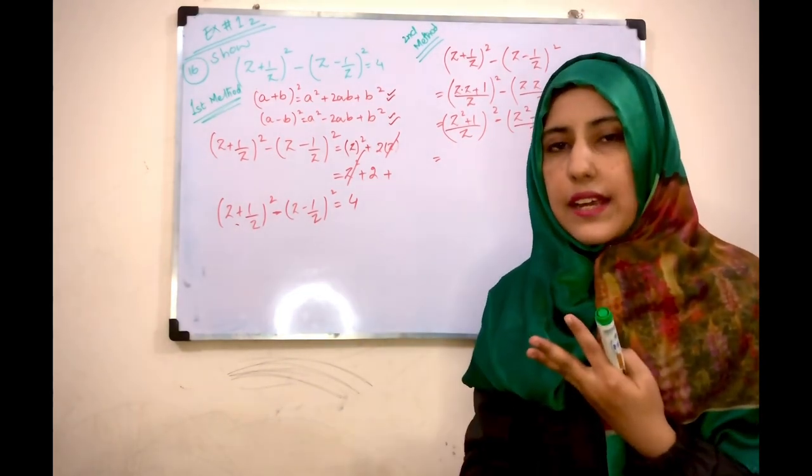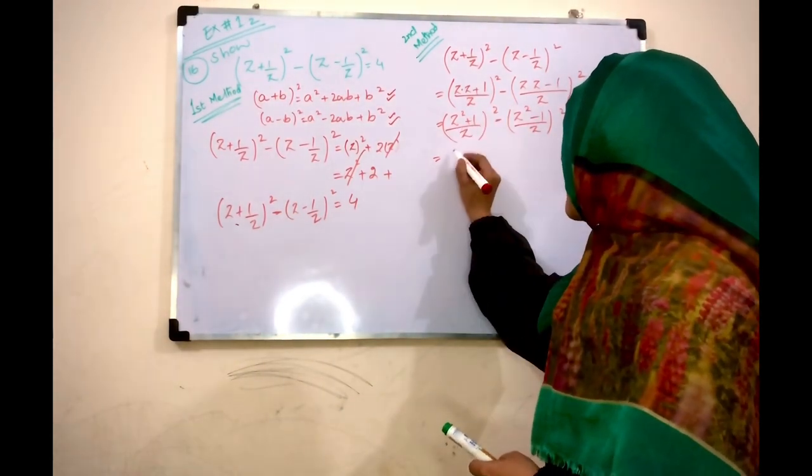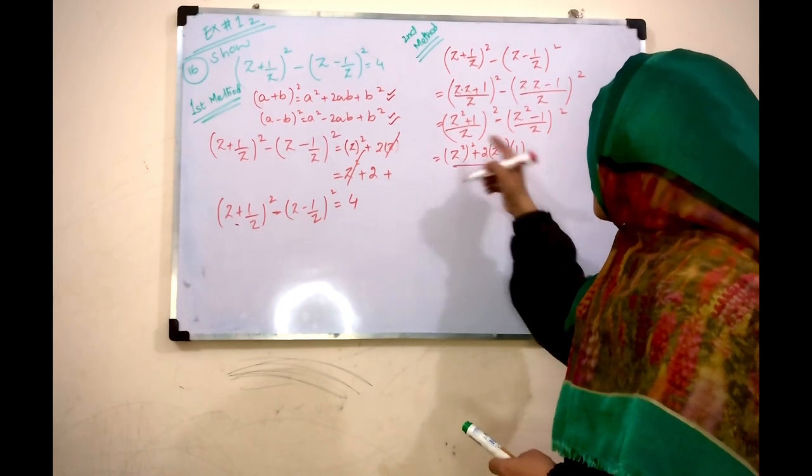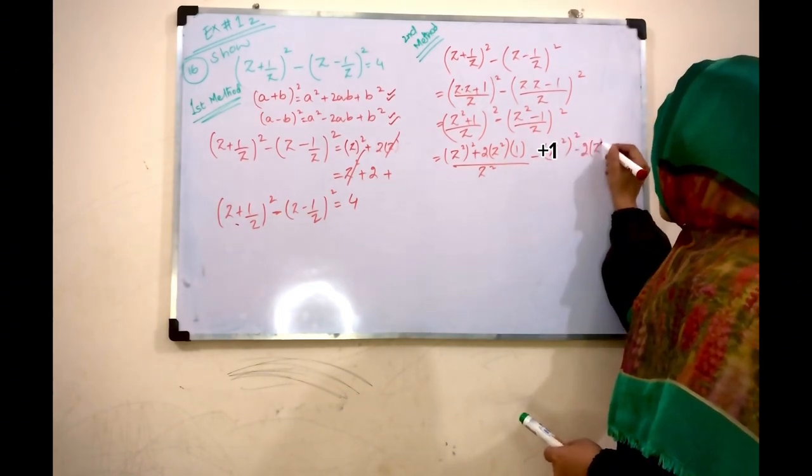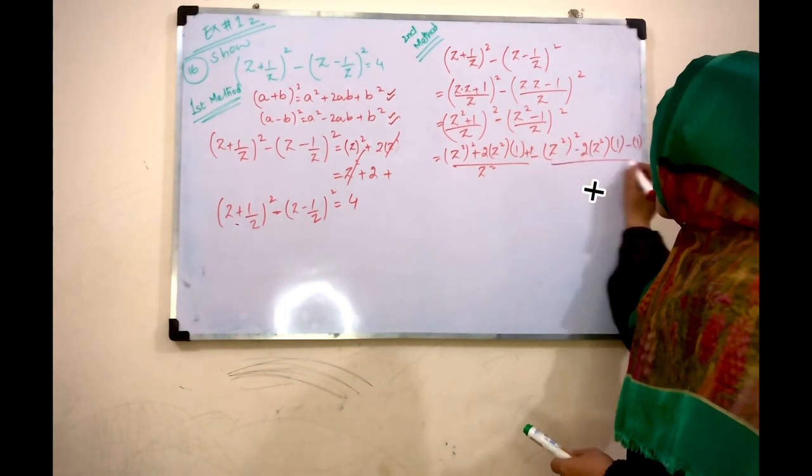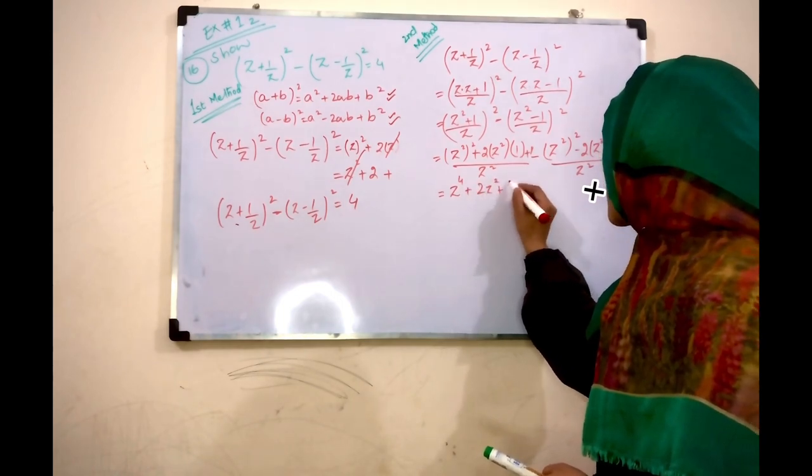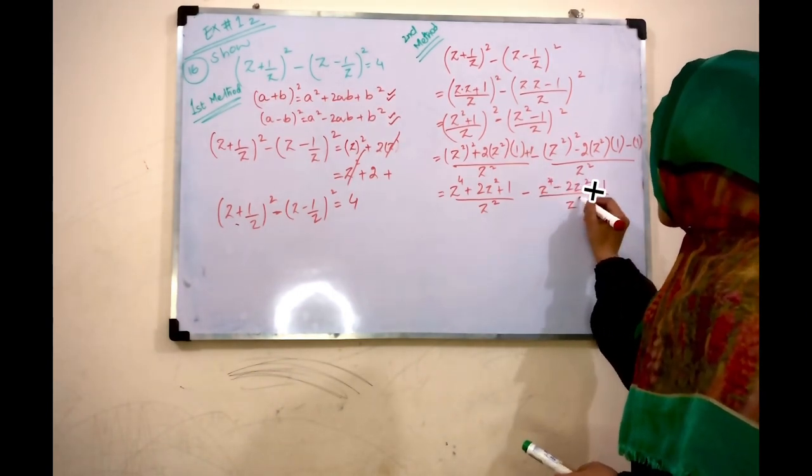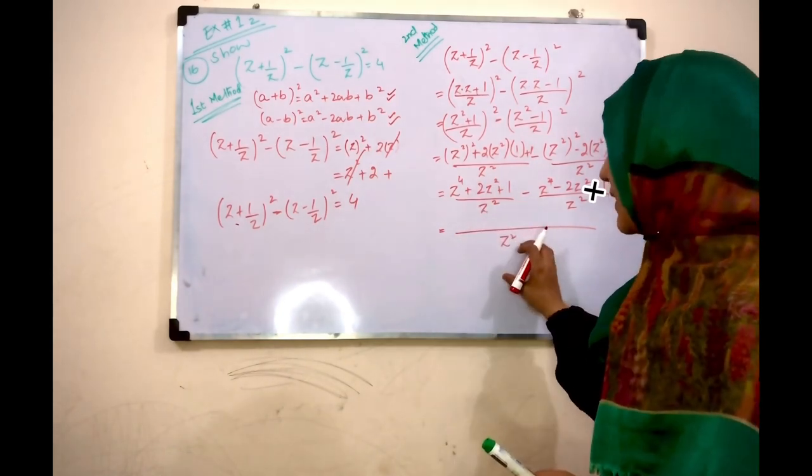Here z² plus 1 divided by z minus z² minus 1 divided by z. Here again we have (a + b)² identity to apply. I have already written it, so I won't write here again. Apply the identity: a² plus 2ab divided by z² minus z² minus 2ab plus 1 divided by z².